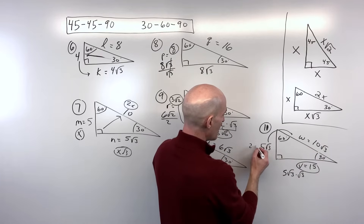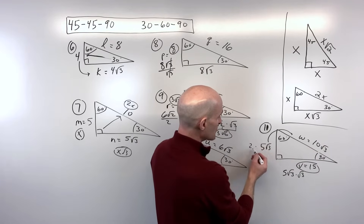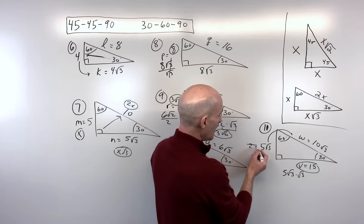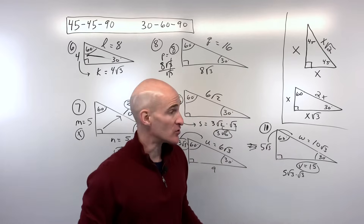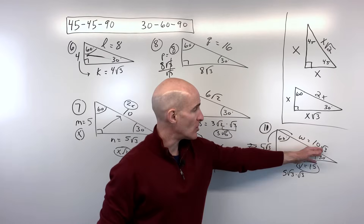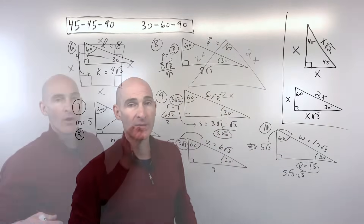Remember, when we multiply by 2, we're just multiplying those integers together and the square root comes along with it.